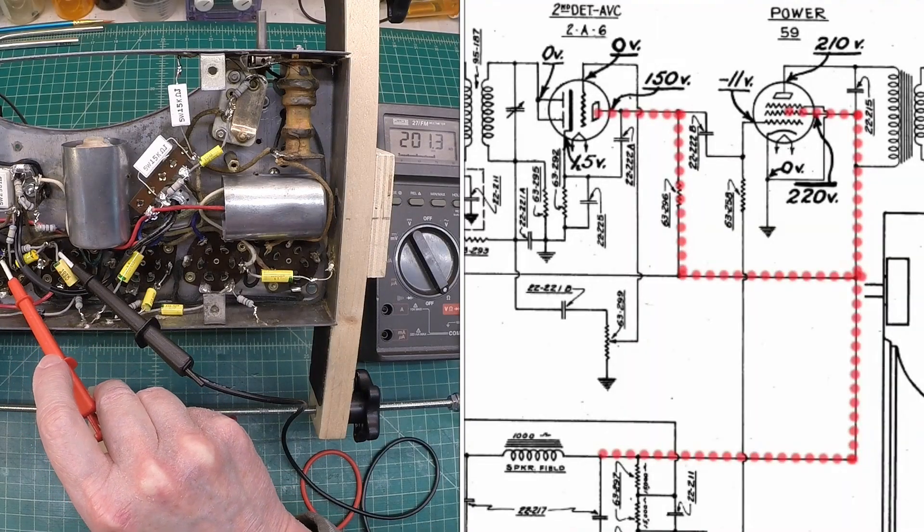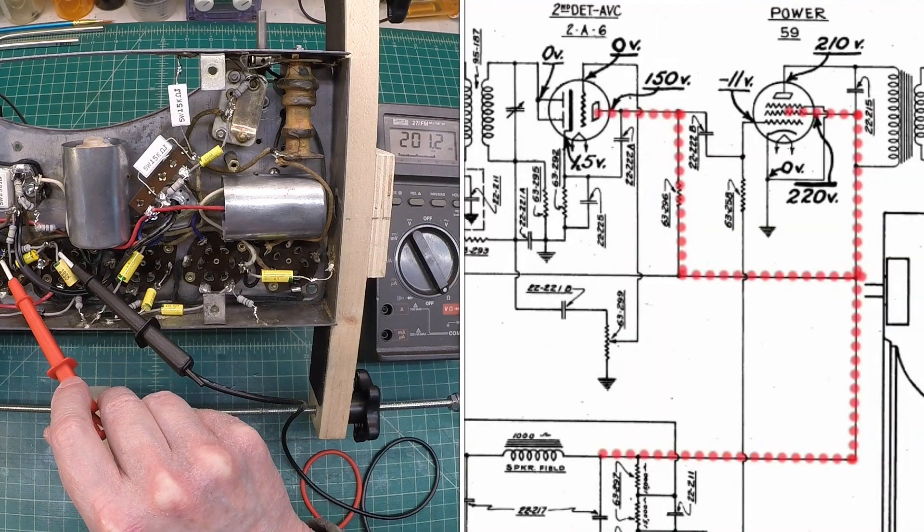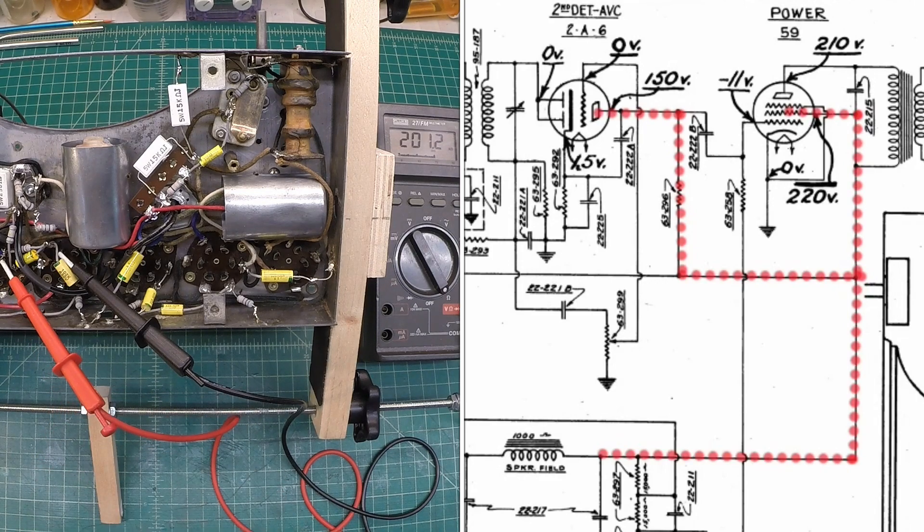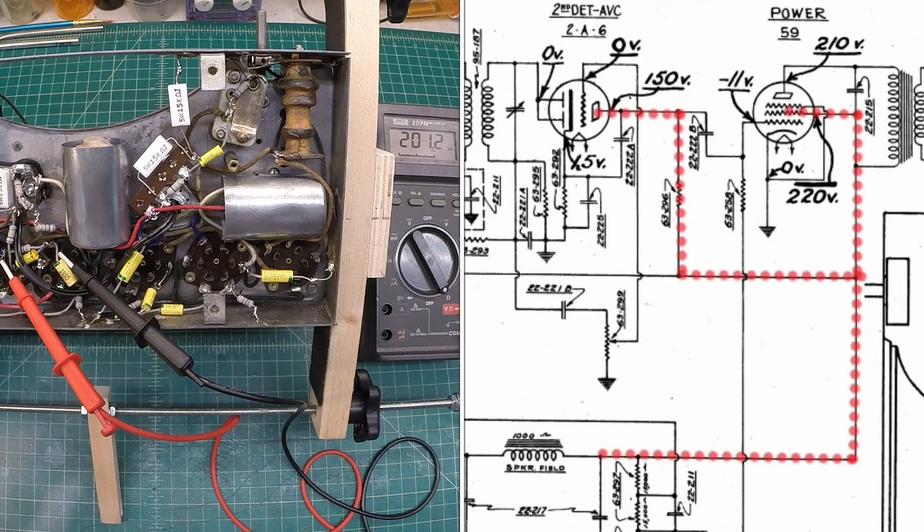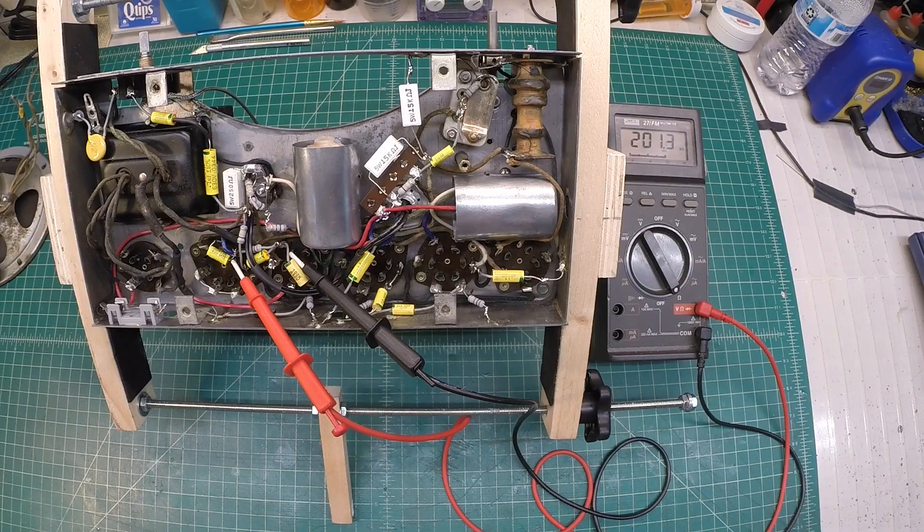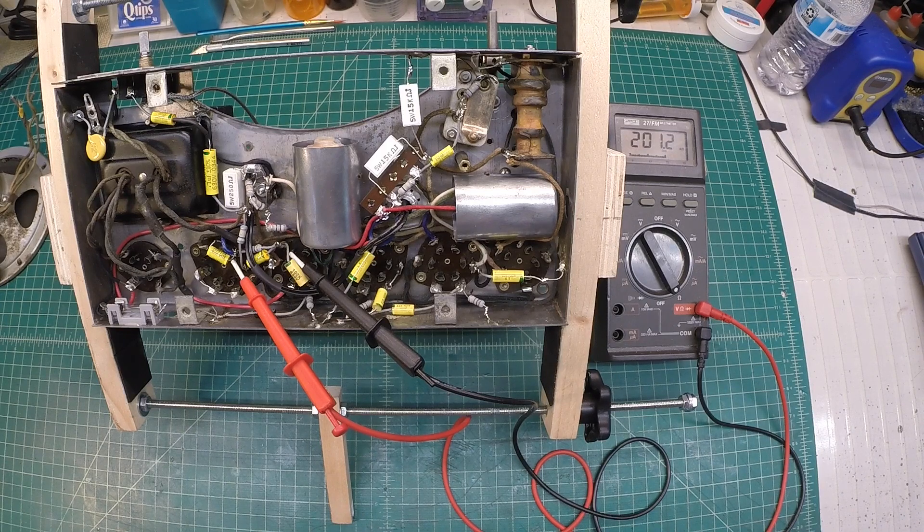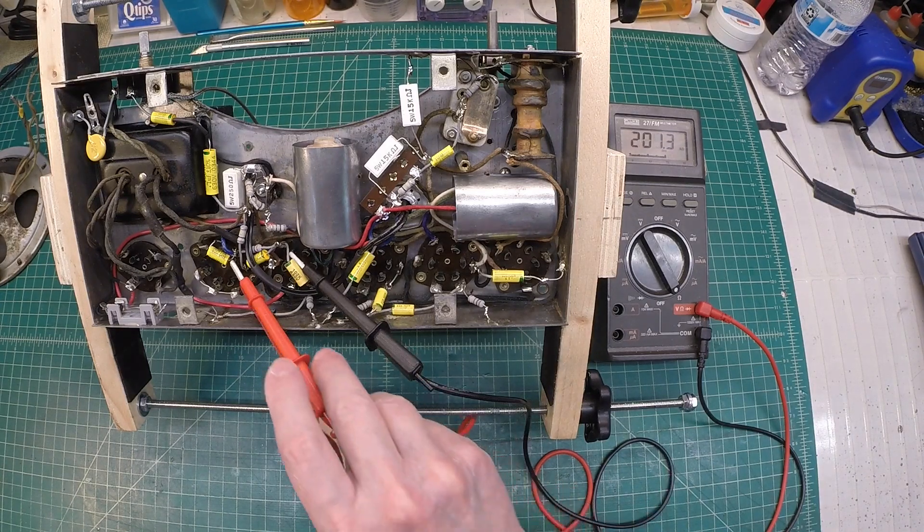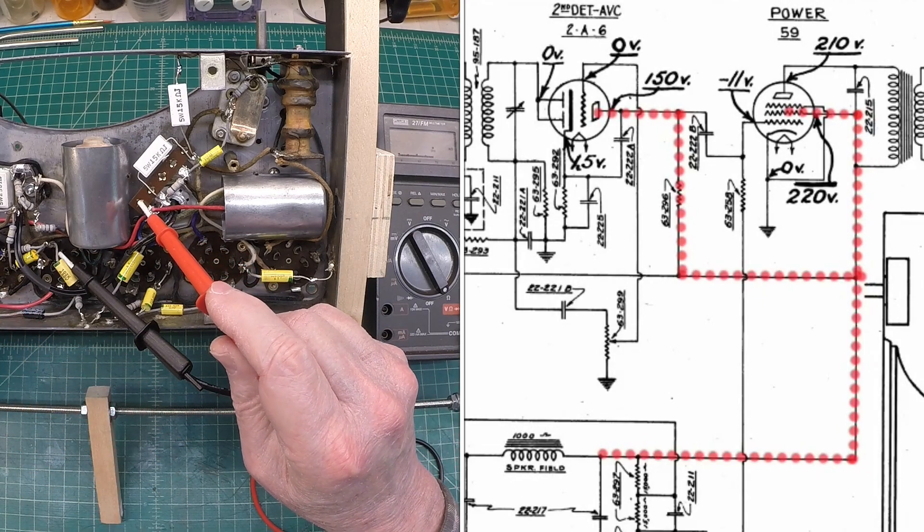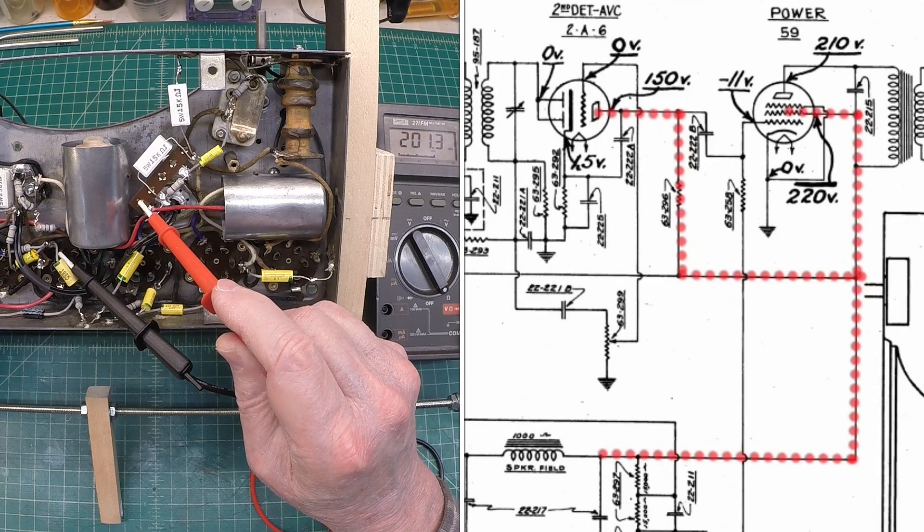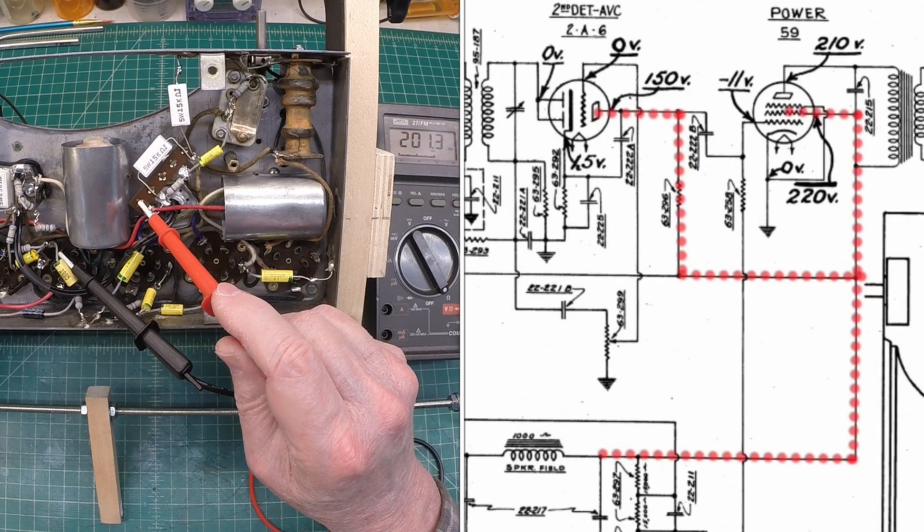Okay, here we're going to check resistor 63-296, running from the plate of the 2A6 back over to grid number two and number three. And you can see I'm reading right at 200k. And that's what I should have. The original design was 220k, and I went back with 200k. So I should be able to remove this lead and go back over to the B plus rail here on the terminal strip and read the same DC resistance. You can see they're tied in together.